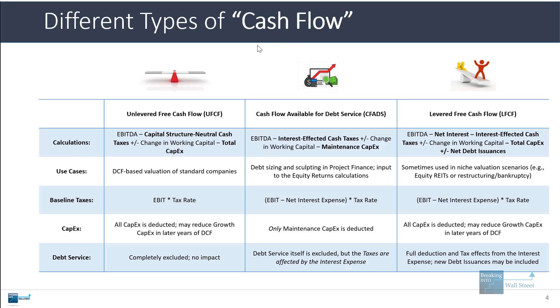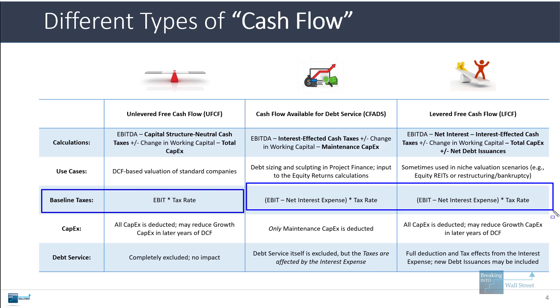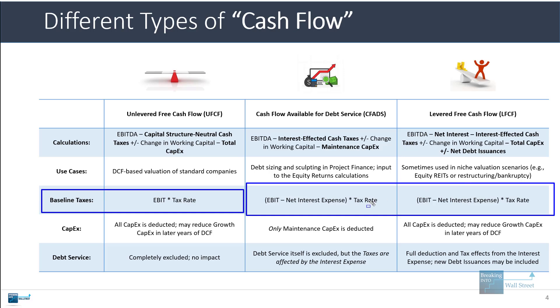For example, with taxes: with unlevered free cash flow, the company's interest and capital structure don't matter at all. But with cash flow available for debt service and levered free cash flow, you do deduct the net interest expense, so the capital structure and debt actually matter.